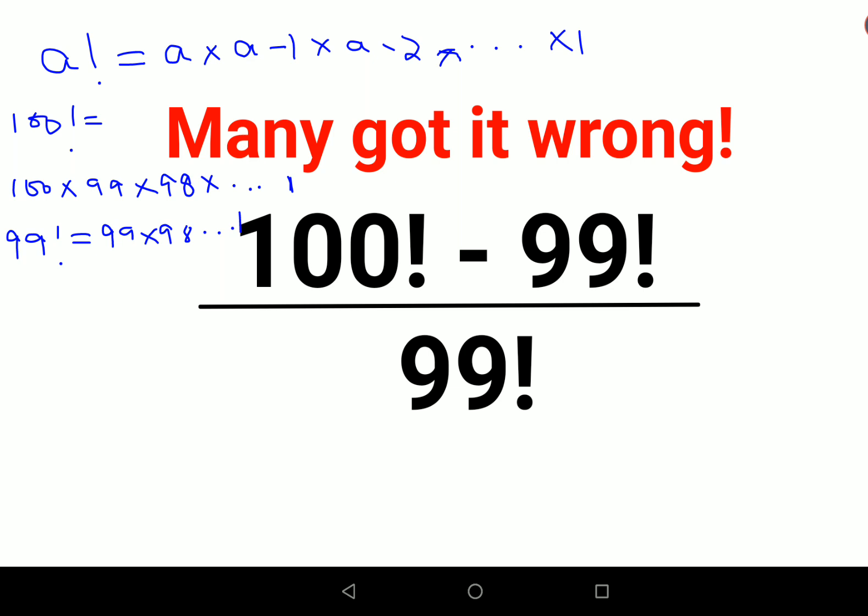Now if you look at your 100 factorial and your 99 factorial, this entire thing is common. So instead of the entire expansion of 100 factorial, I can write this as 100 into 99 factorial, correct?